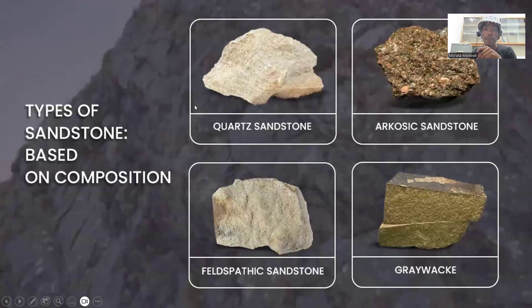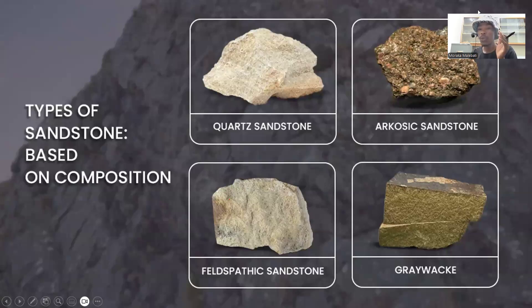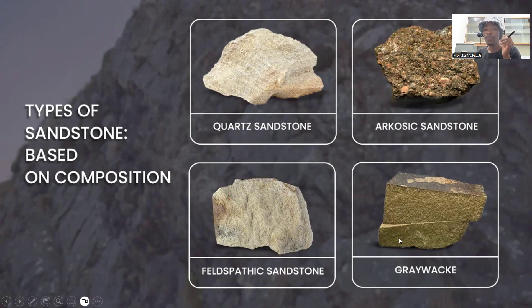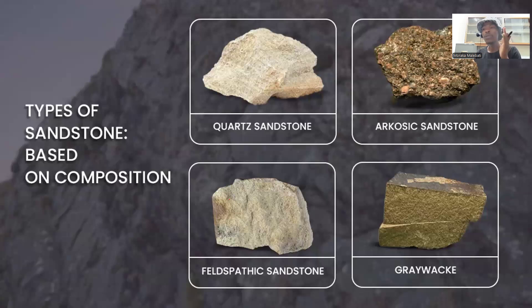This is the classification of sandstone according to mineral composition. The quartz sandstone contains over 90 percent quartz. The feldspathic sandstone contains at least 25 percent feldspar. The graywacke has a clay matrix ranging between 15 and 75 percent — and we call that a wacke.